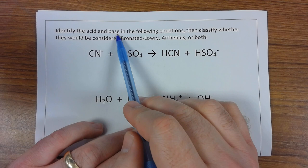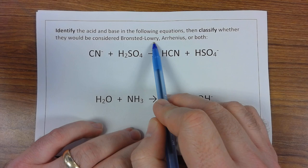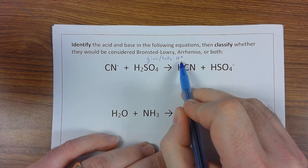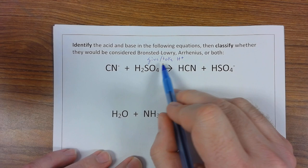All right, our first task is to determine who is the acid and who is the base in the following reactions. We're going to use the Bronsted-Lowry definition, which is all about the give and take of H+, which you'll hear me refer to as a proton in chemical reactions.